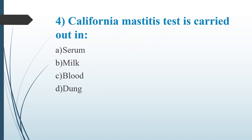Fourth question: California Mastitis Test is carried out in. Option A, Serum. Option B, Milk. Option C, Blood. Option D, Dung. Answer is Option B, Milk. California Mastitis Test is a somatic cell count test.